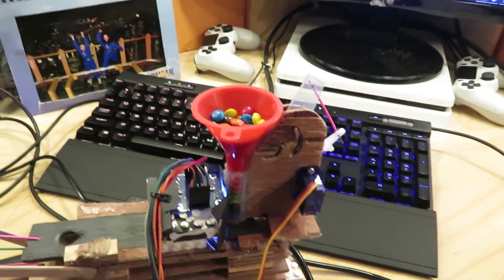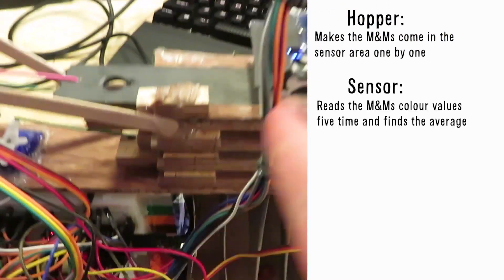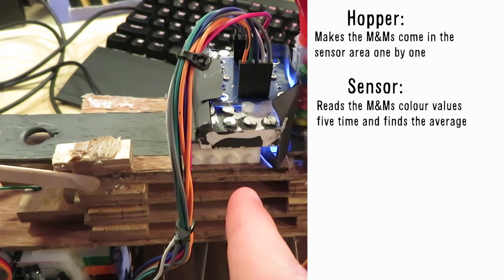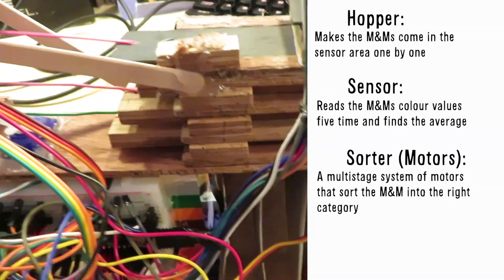There are three main parts of the machine: the hopper which makes the M&Ms travel out one by one, the sensor that reads the color values, and the sorter itself which physically moves the M&Ms into the right category.